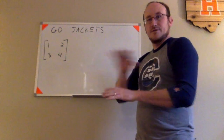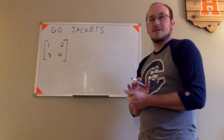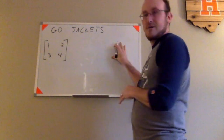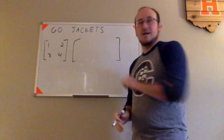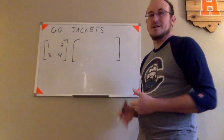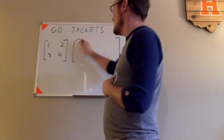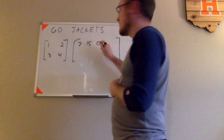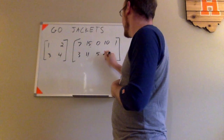Now that I've converted the message into numeric values and selected a coding matrix, I need to arrange that string of numbers into an appropriate number of rows so it can be multiplied by this matrix. This matrix has two columns, so the data matrix must have two rows — I need a 2x5 matrix. My string of numbers for 'GO JACKETS' including the space had 10 values, so I'll use two rows of 5. Filling those in: 7, 15, 0, 10, 1 in the first row, and 3, 11, 5, 20, 19 in the second.